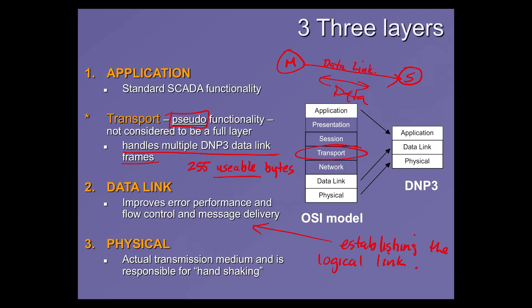If you have a master and a slave in DNP3, the data link layer builds that bridge by which you can move data back and forth between the two, establishing that on a session basis. Every time the master comes around to talking to that slave, it uses the data link layer to establish the logical link, then moves data over that logical link. Sometimes DNP3 messages are just a data link layer message only — like a ping to confirm the logical link is still established and check connectivity. The physical layer can be RS-232, RS-485, or Ethernet.